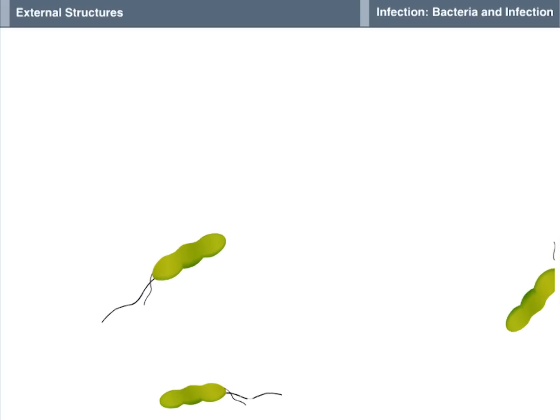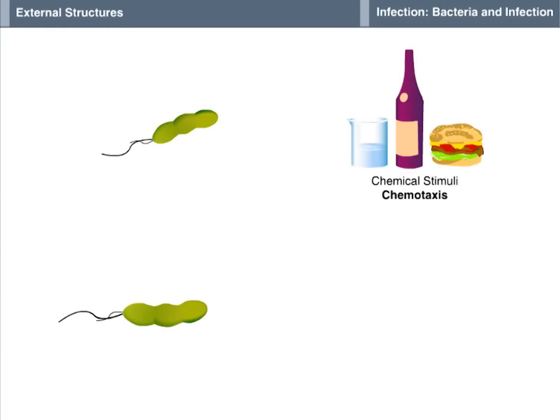The response of sensors located in the cell wall to specific stimuli produces taxes, movement toward or away from the stimulus. The major responses of motile bacteria are chemotaxis, the response to chemical stimuli, and phototaxis, the response to light.